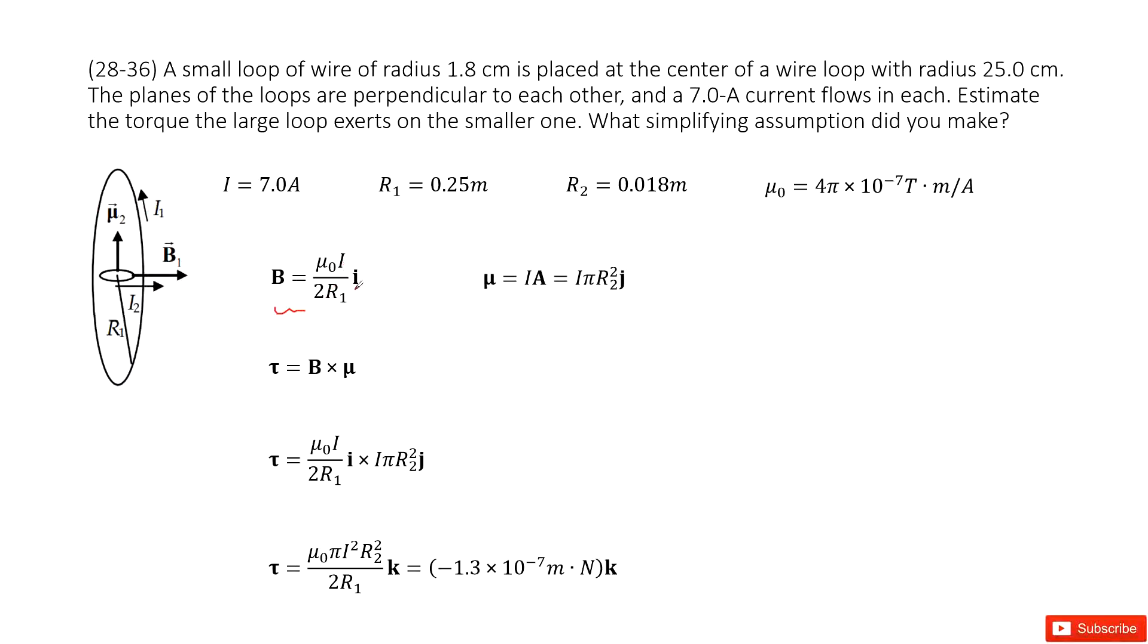That is in the i direction, this way. This is B1. And then the smaller loop is at the center of this larger loop, and we can consider it as a dipole.